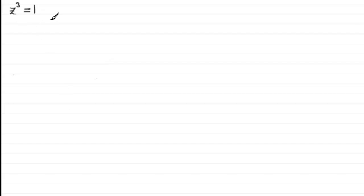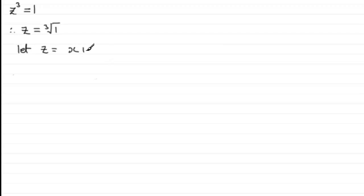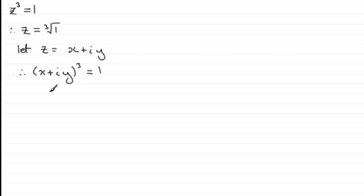The easy example is z cubed equals 1, so z would be equal to the cube root of 1. We've done questions like this in the past using this method. We've let z equal x plus iy, so therefore x plus iy all cubed must equal 1. We've expanded this and compared real parts and imaginary parts, solved the corresponding equations for x and y, and substituted them back to give z.